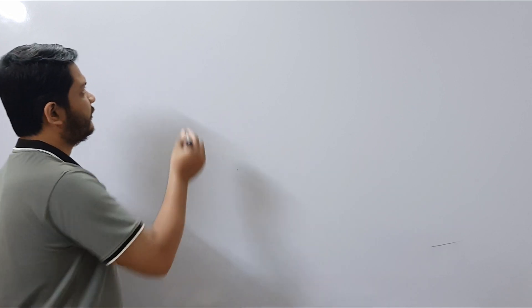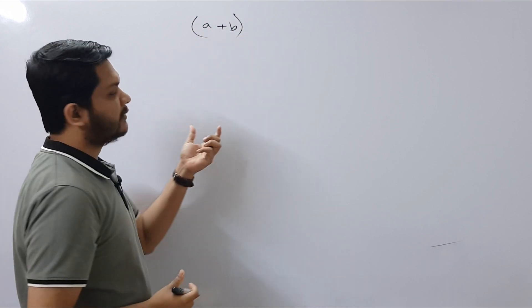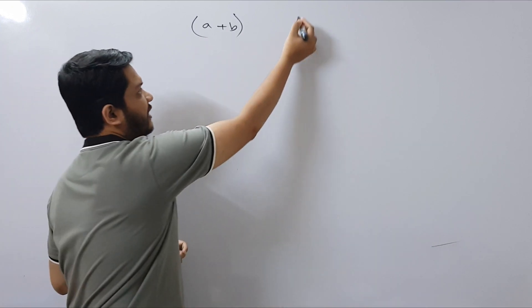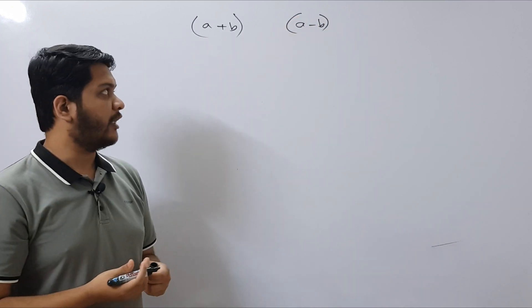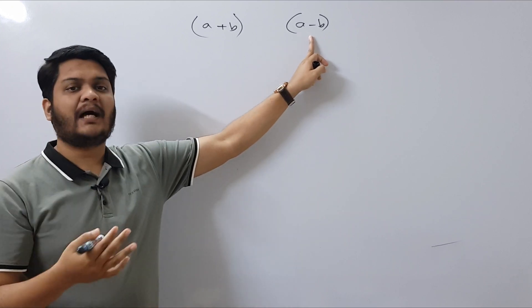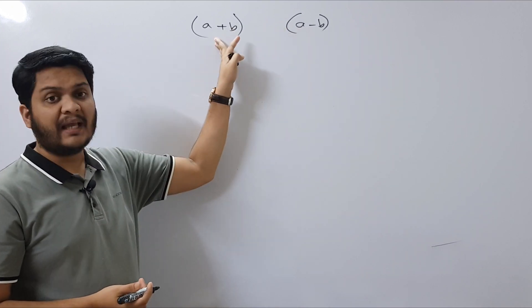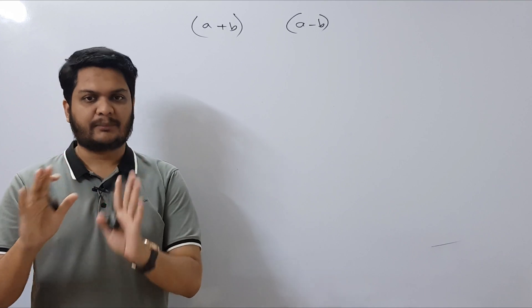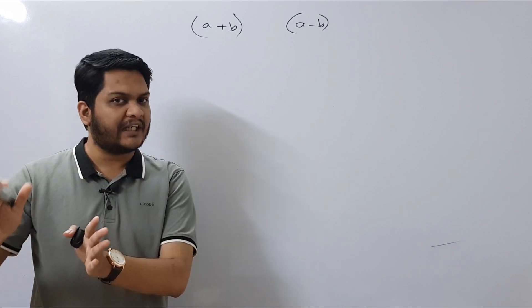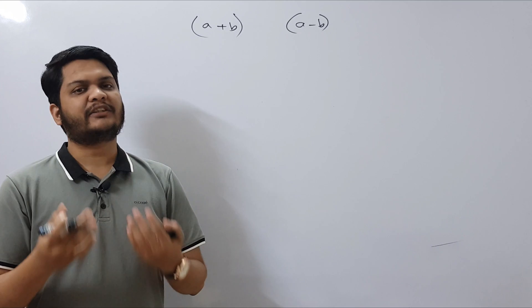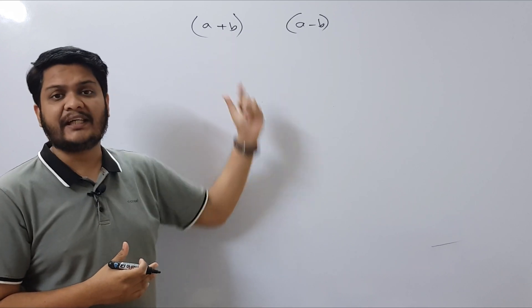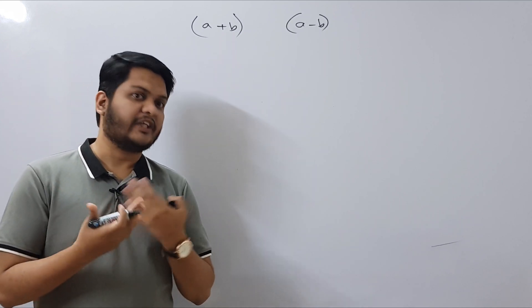So what is conjugate expression exactly? If we have two terms, say a plus b, this is an expression. The conjugate expression of this particular expression will be a minus b, and vice versa. So if we have a minus b, then the conjugate expression will be a plus b. So if you have a plus b, its conjugate will be a minus b, and if you have a minus b, its conjugate will be a plus b. So when will we exactly apply this technique of conjugate expression? Let's see some examples.